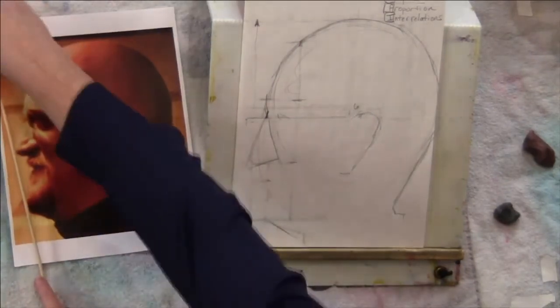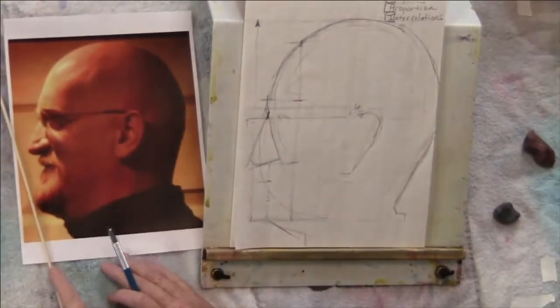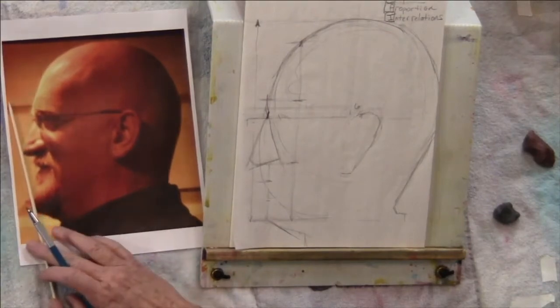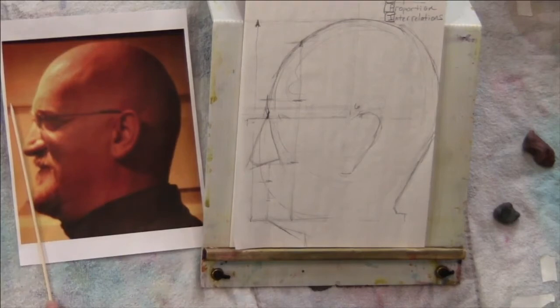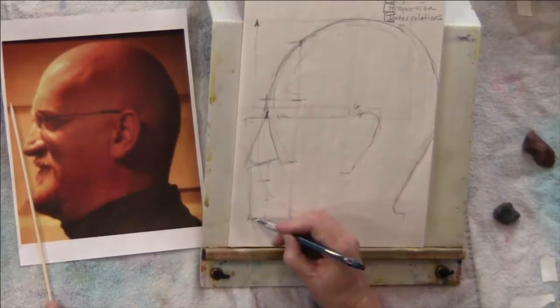What is that implied line there? So the tip of the nose to the edge of the chin is almost vertical, isn't it? Almost. I'm going to draw that angle so I can find this mapping point.